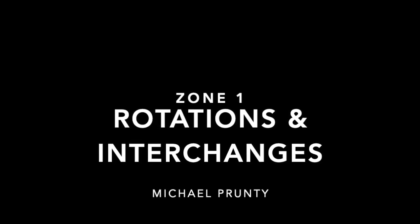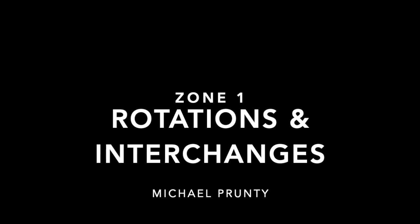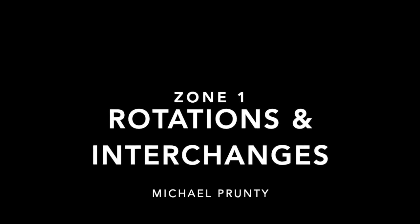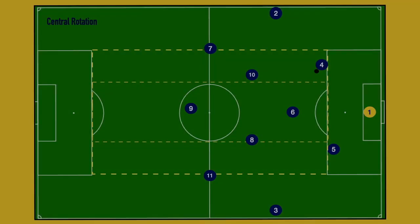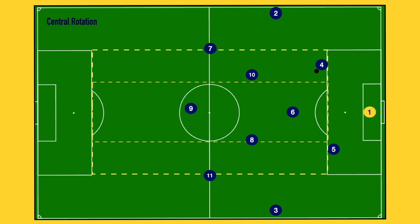I'm going to start by looking at some of the rotations and interchanges we use in the buildup phase. The work here is going to be shown from a four through three. The first one to look at is a central rotation. It's a really simple idea — just a way to help my players free themselves from man marking, which is a pretty common ploy at the collegiate level.